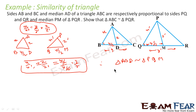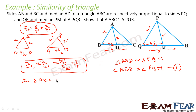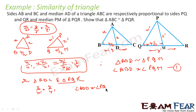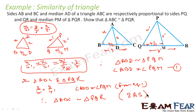Since triangle ABD is similar to triangle PQM, angle B equals angle Q — this is equation 1. Now in the bigger triangles ABC and PQR, AB/PQ equals X/X dash equals BC/QR equals Y/Y dash (given). Also, angle ABD equals angle PQM from equation 1. Therefore, triangle ABC is similar to triangle PQR by SAS — side angle side rule.